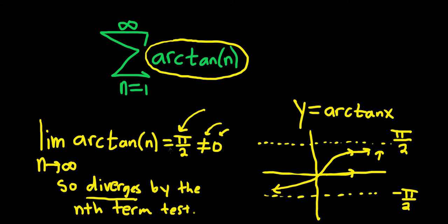Again, if we get 0, then the test fails, and we can't really say anything. We can't say it converges. So it's only when you get not equal to 0 that you can say it diverges.